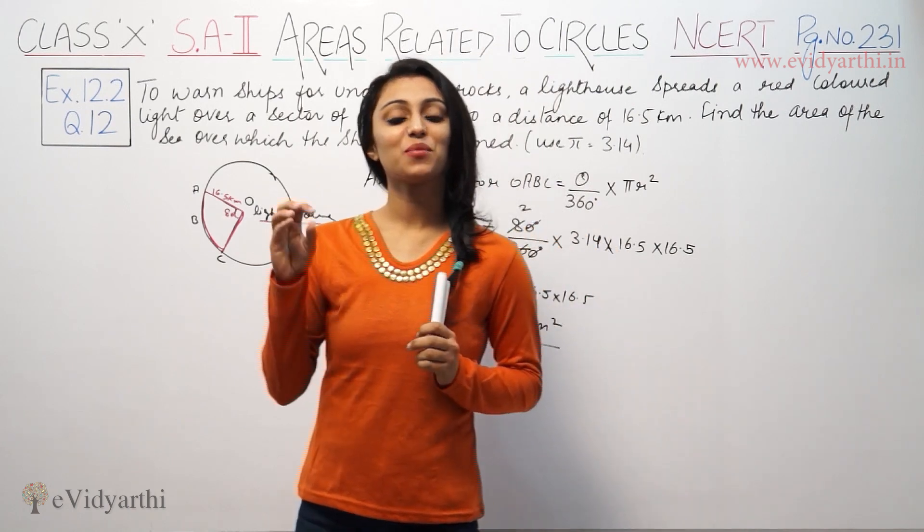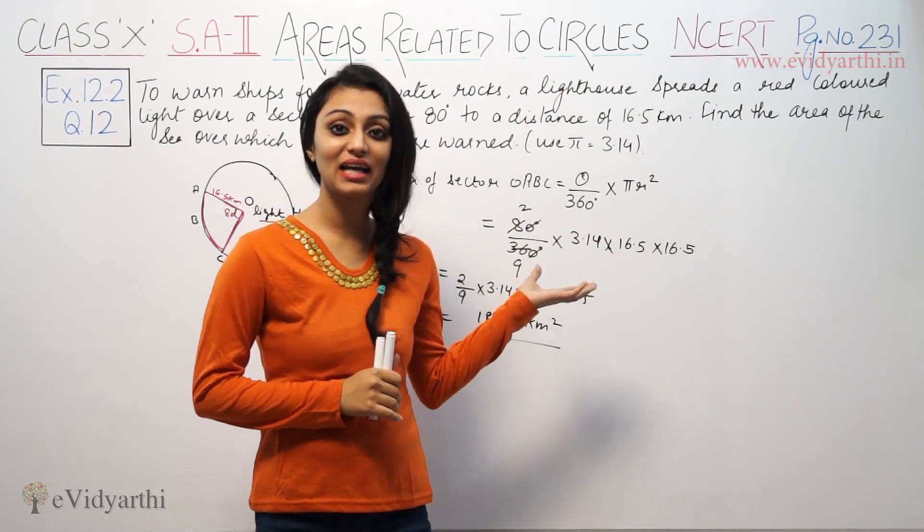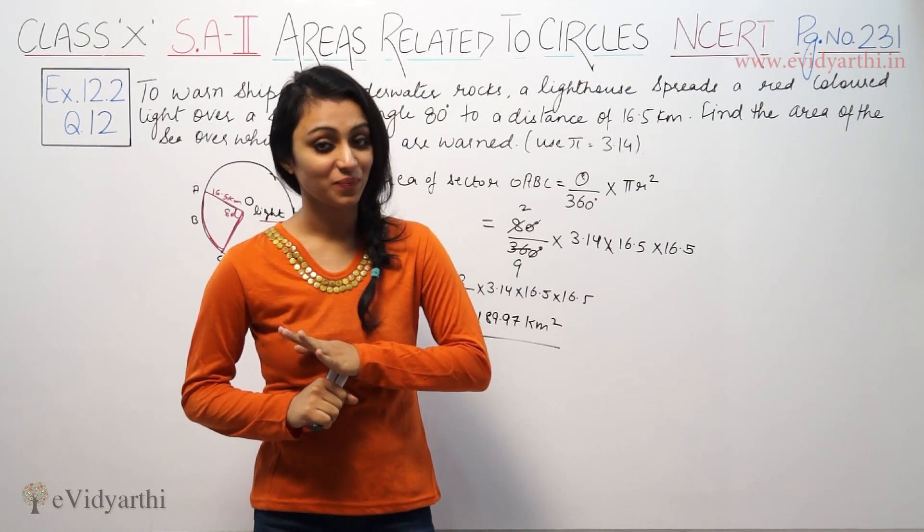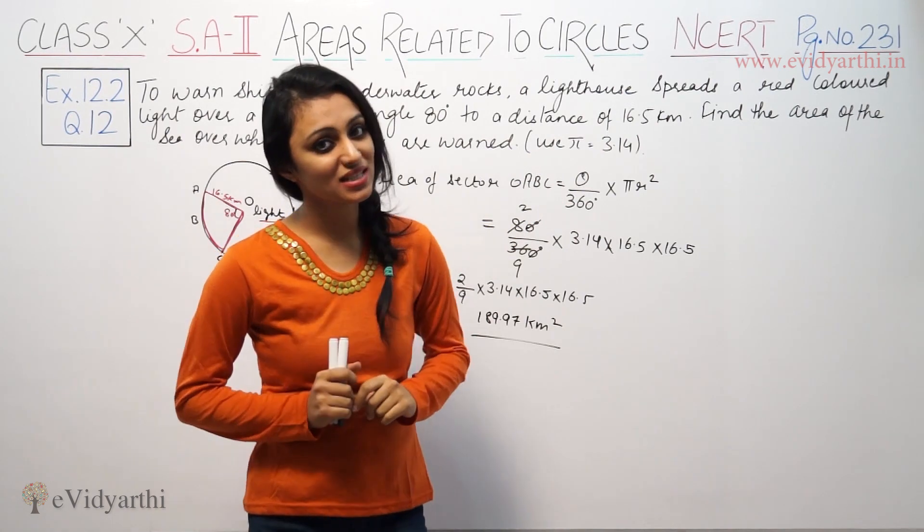So basically in questions you need to understand the question. You need to know which formula you need to write, what is theta and what is radius. If pi value is given in the question, write it. If it is not given, then you can use 22 by 7.